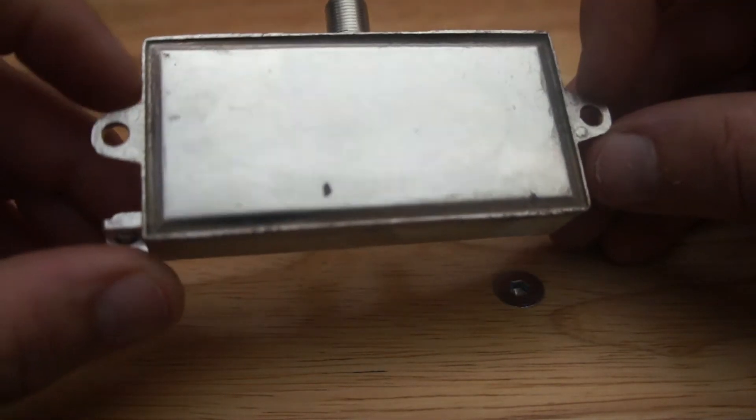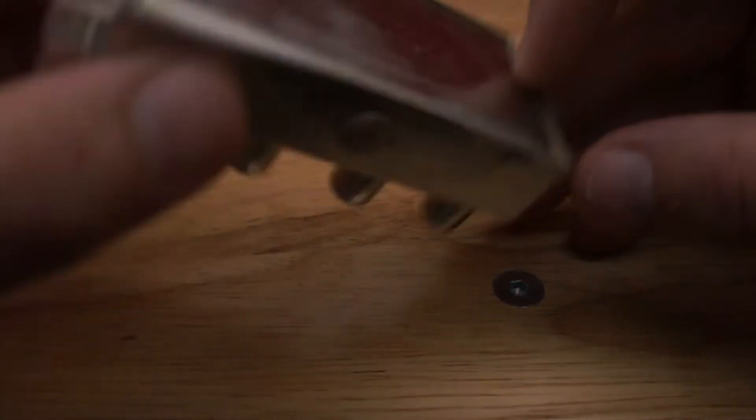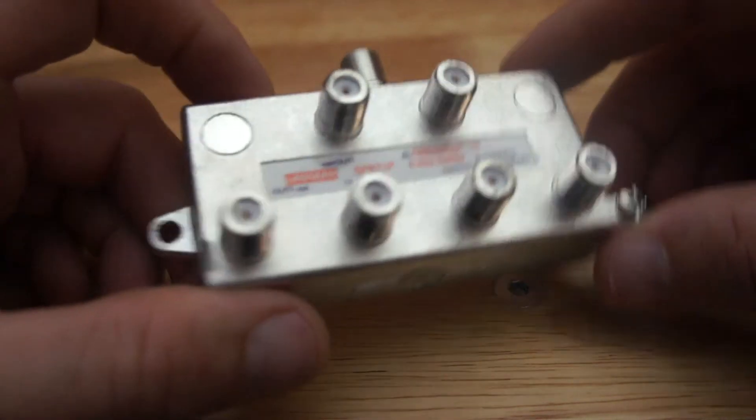It has two little holes. Most splitters do for screwing in, mounting it to timber, mounting it to the wall, mounting it to a joist inside the ceiling, etc.